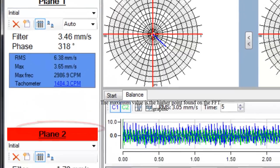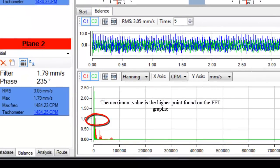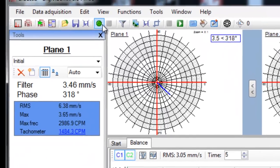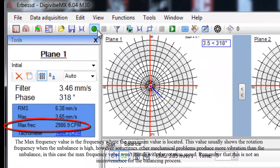The maximum value is the higher point found on the FFT graphic. The max frequency value is the frequency where the maximum value is located. This value usually shows the rotation frequency when the unbalance is high, however sometimes other mechanical problems produce more vibration than the unbalance. In this case, the max frequency value won't match with the rotation speed. Remember that this is not an inconvenience for the balancing process.